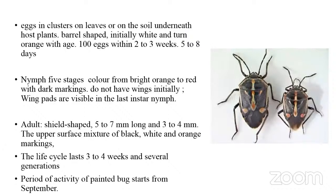The biology: the female lays eggs in clusters on leaves or in the soil underneath the host plant. Eggs are barrel-shaped, initially white then gradually turning orange with age. A single female can lay as many as 100 eggs within two to three weeks. Incubation period is five to eight days. Nymphs pass through five stages, changing color from bright orange to red with dark markings, gradually acquiring adult coloration. Wing pads appear in the last instar nymphs.